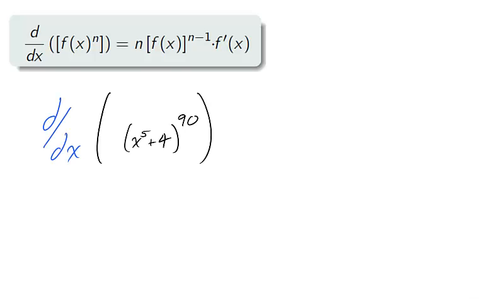For example, take x to the 5th plus 4 to the 90th power. The outside function is x to the 90th, and the inside function is x to the 5th plus 4.